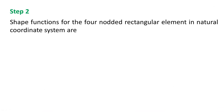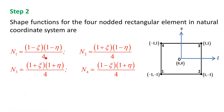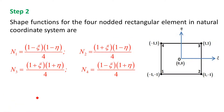Step 2: Write down the shape functions for the 4-noded rectangular element in natural coordinate system. Node 1 has coordinates (-1, -1), so the shape function is N1 = (1 - xi)(1 - eta)/4. Node 2 has (+1, -1), so N2 = (1 + xi)(1 - eta)/4. Node 3 has (+1, +1), so N3 = (1 + xi)(1 + eta)/4. Node 4 has (-1, +1), so N4 = (1 - xi)(1 + eta)/4.